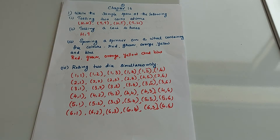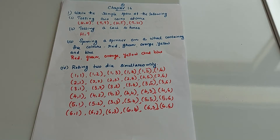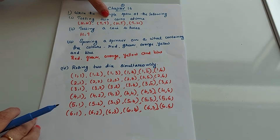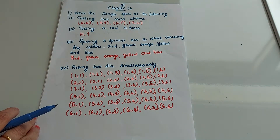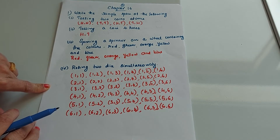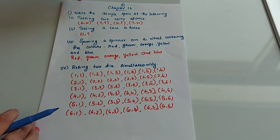Hi students, today I am going to explain some questions from your chapter on data handling — the questions based on probability. Our first question is: write the sample space of the following. What do you mean by sample space? The sample space is all the possible outcomes when you do an experiment.